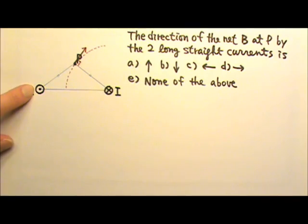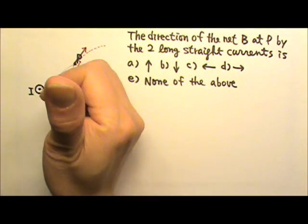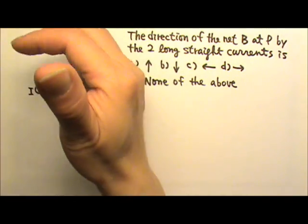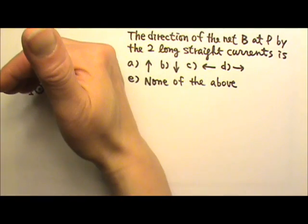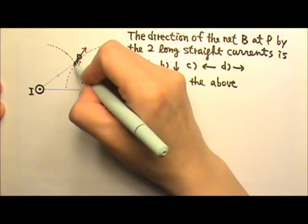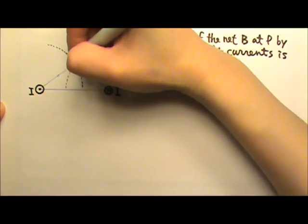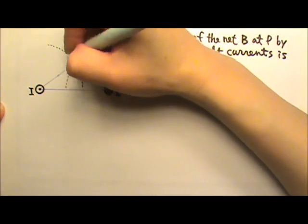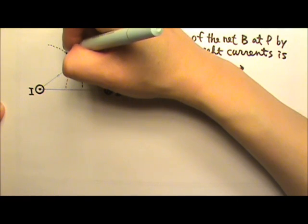Same thing for this current. My thumb follows the current out of the paper. The field lines are counterclockwise circles. So the magnetic field at point P must be counterclockwise tangent to the circle.